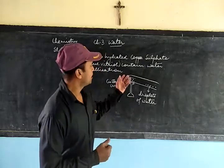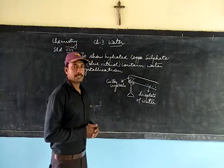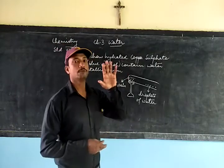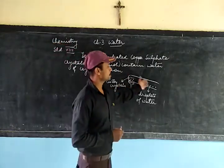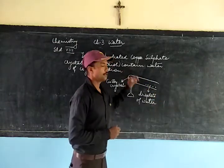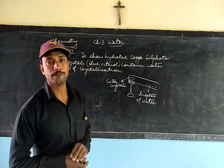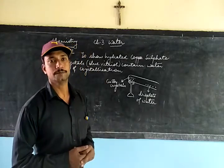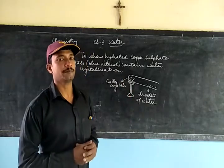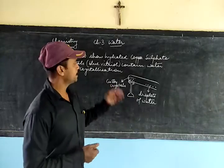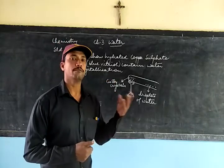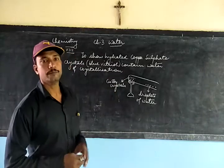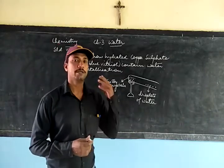Copper sulfate crystals are blue in color because water molecules are associated with them. But when the water molecules come out gradually, the blue color fades and the crystal changes into anhydrous white copper sulfate. It is called anhydrous because no water molecules are left — it is dry, white, and amorphous due to the absence of water of crystallization.